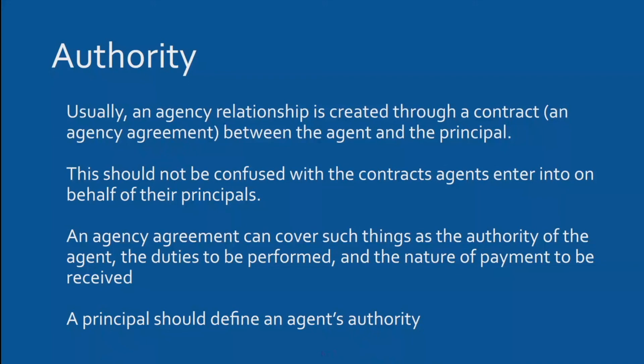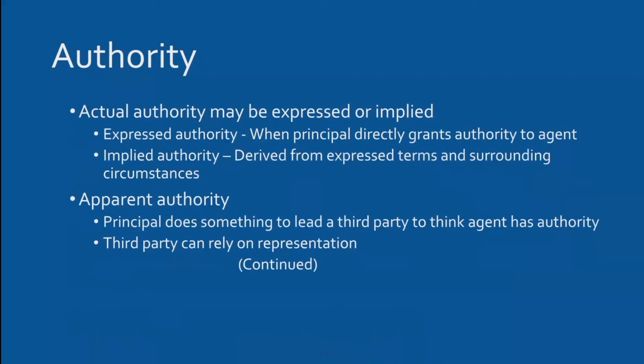From the principal's point of view, you need to make crystal clear to the agent what they're being asked to do and the limits of their authority. This is called the actual authority of the agent. It can be expressed in writing — a document that clearly states the principal grants authority to the agent to do specific things.